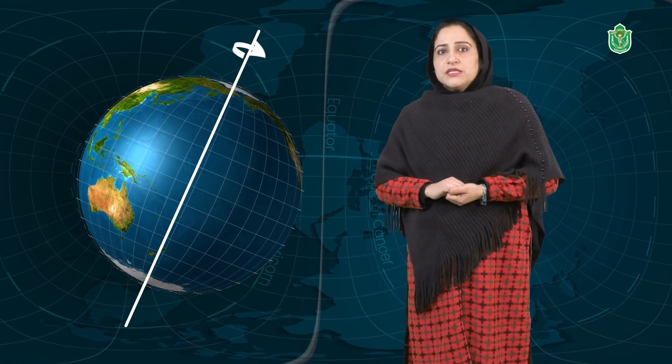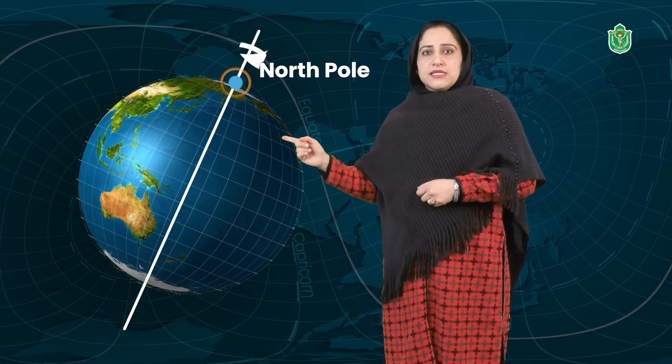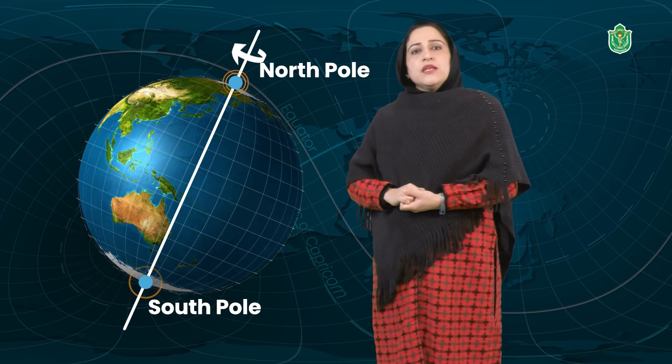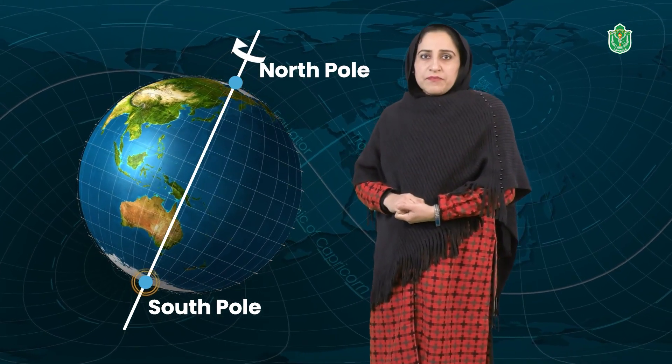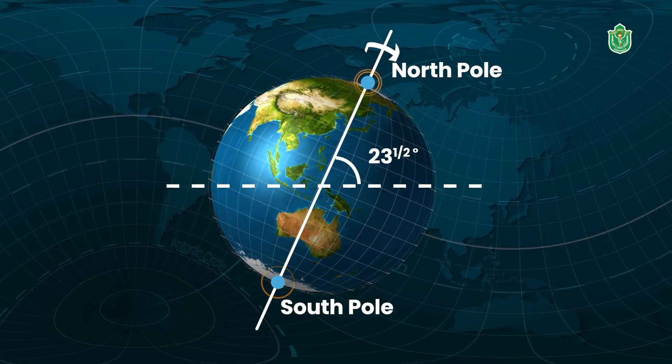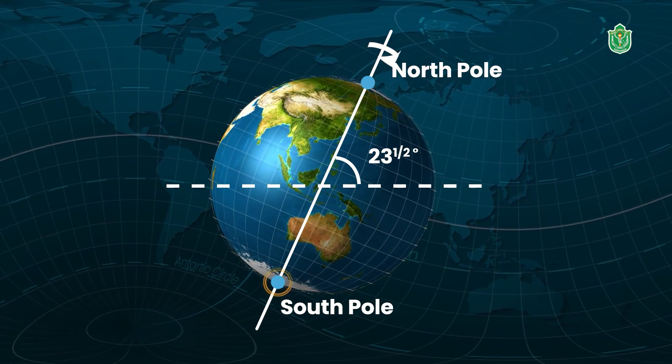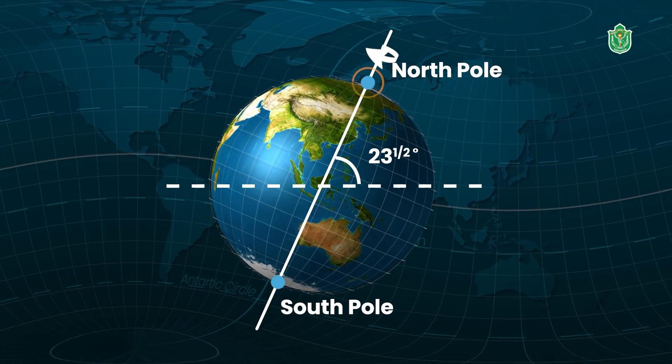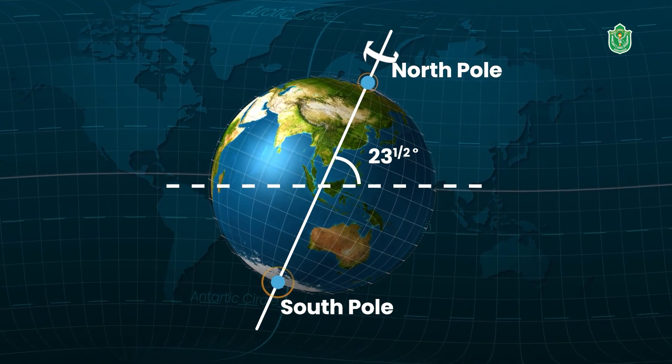These imaginary lines help us to show the location or position of a particular place exactly on a globe. The first important line is the axis. It is the line which passes through the center of the earth and it has its two end points — one is the north pole and the second is the south pole. This is the imaginary line on which the earth rotates in 24 hours, and it makes an angle of 23 and a half degrees with the horizontal plane of the earth.